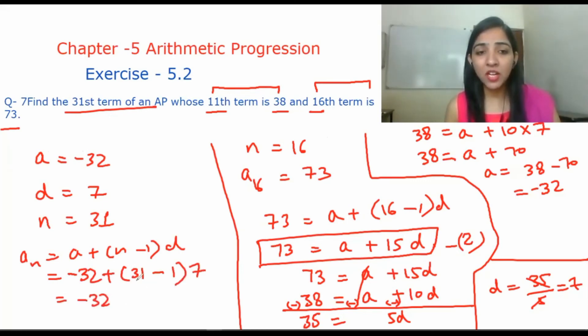Minus 32 plus 31 minus 1 is 30 times 7. So this is minus 32 plus 210. And when it is solved, our answer is 178. This is our answer. Sorry, plus 178 is the answer.